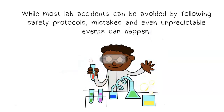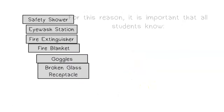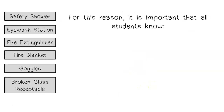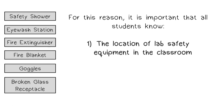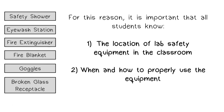While most lab accidents can be avoided by following safety protocols, mistakes and even unpredictable events can happen. For this reason, it is important that all students know: one, the location of lab safety equipment in the classroom; two, when and how to properly use the equipment.